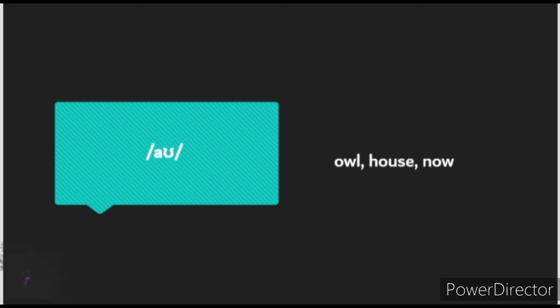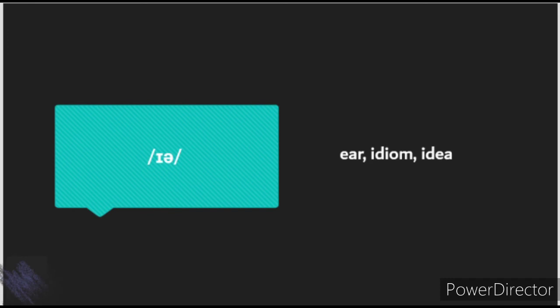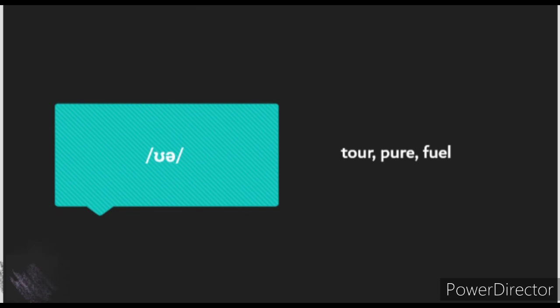The next sound is /aʊ/, as in 'owl', 'house', and 'now'. The next sound is /eə/, which is a combination of A and A, as in 'air', 'tail', and 'where'. The next sound is /ɪə/, which is a combination of E and A, as in 'ear', 'idea', and 'clear'. The next sound is /ʊə/, which is a combination of OO and A, as in 'tour', 'pure', and 'fuel'.